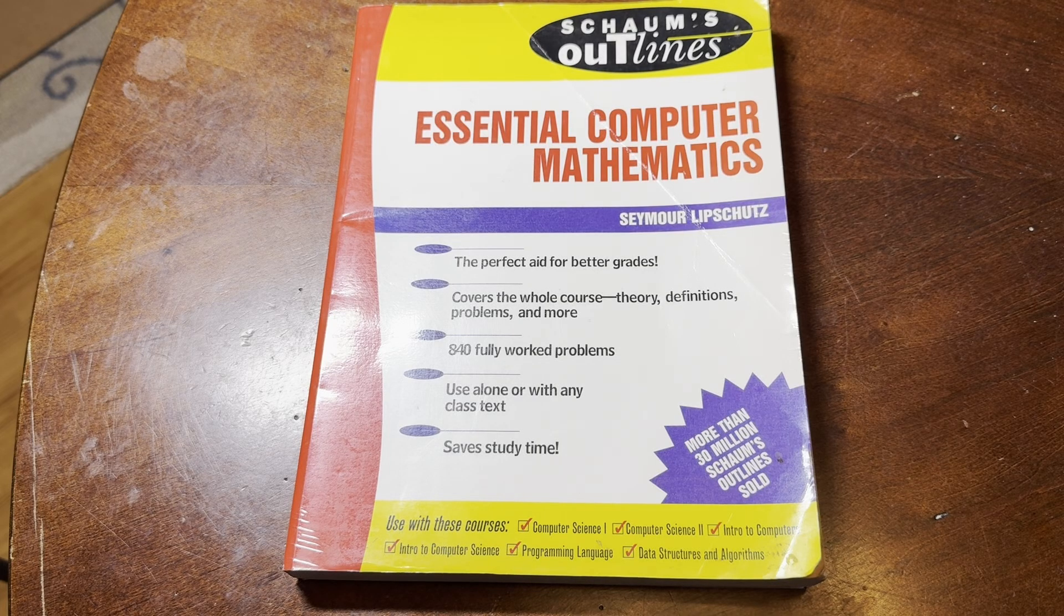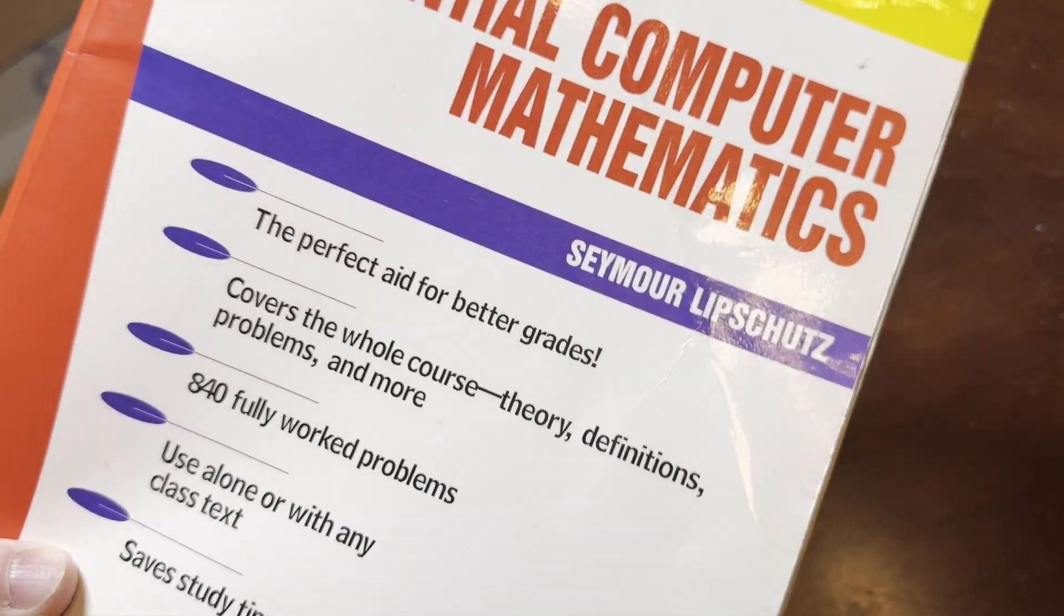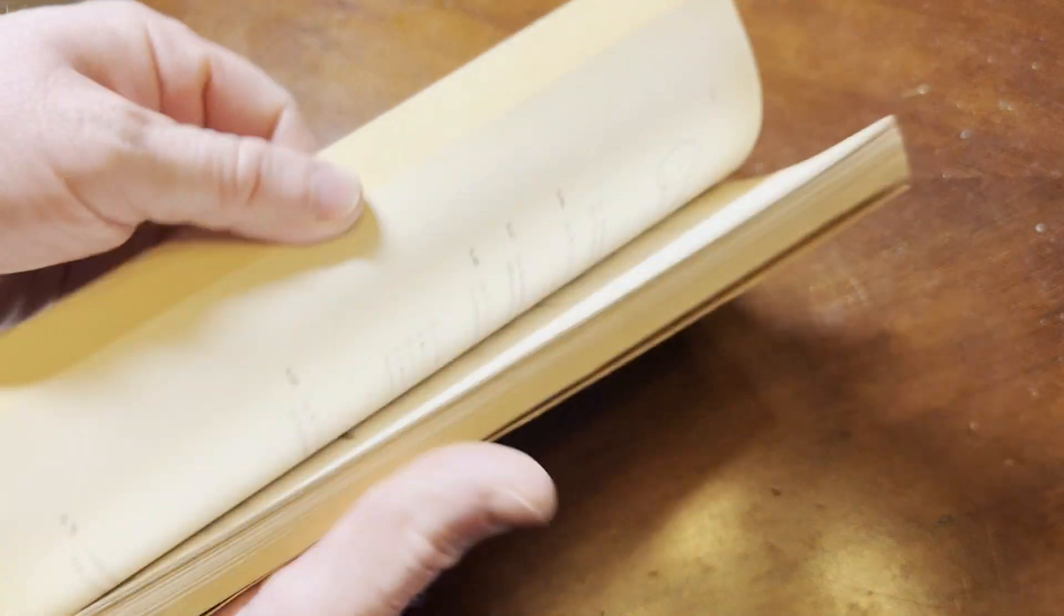This is an interesting book. It is called Essential Computer Mathematics and was written by Seymour Lipschutz and this is part of the Schaum's Outline series. These books are great. I highly recommend them.